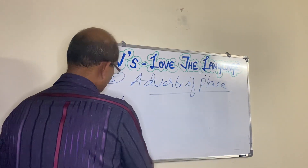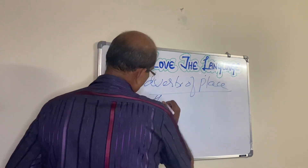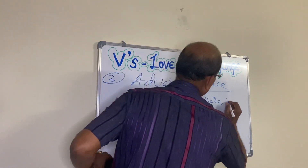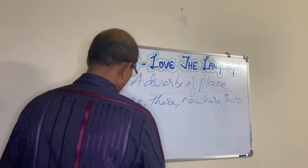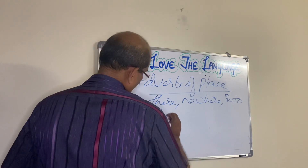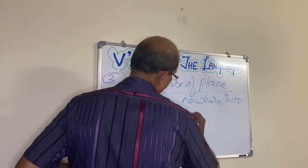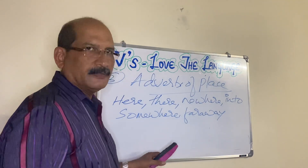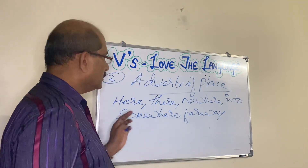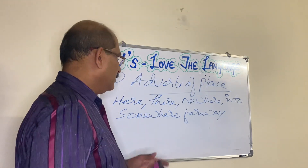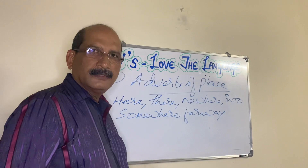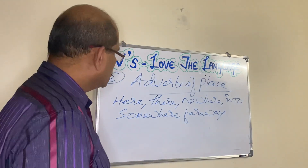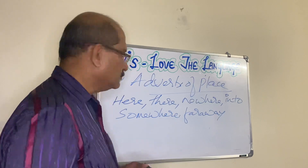Examples of adverb of place include: here, there, nowhere, into, somewhere, far away. There are plenty more examples, but as of now I will take you through these. I will form some sentences using these adverbs of place so that the usage of these words will be clear to you.